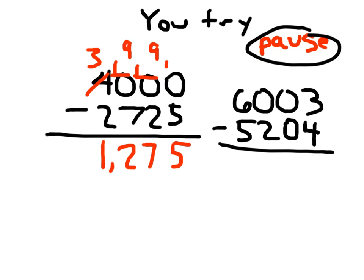For the solution for this one, I'm going to go step by step. In the ones place, 3 minus 4 can't do it. Can't regroup from the tens place or the hundreds place, but can regroup from the thousands place. 6 becomes a 5. 0 becomes a 10, so it can become a 9. And this 0 becomes a 10, then it becomes a 9, so this 3 becomes 13. 13 minus 4 is 9. 9 minus 0 is 9. 9 minus 2 is 7. 5 minus 5 is 0.